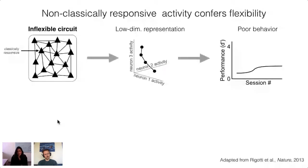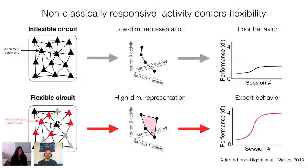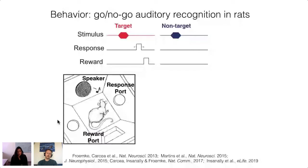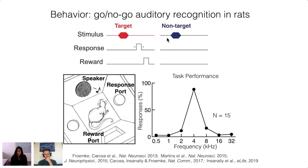What's the potential benefit of having such diverse response profiles? Based on work in the Fusi lab, cells with complex responses may confer flexibility to neural circuits by generating high-dimensional representations, resulting in significant computational advantages for implementing adaptive behaviors. We approached this by recording from auditory or frontal cortex during a go/no-go frequency recognition task where animals were trained to respond to a target tone for food reward and withhold from responding to non-target tones. Animals can learn this task within a few weeks. The bottom right panel shows performance for 15 animals — high hit rates for the 4 kHz target tone and low false alarm rates for non-target tones.